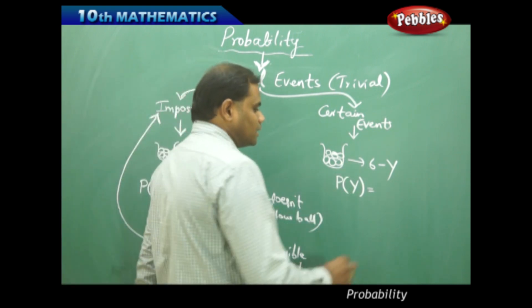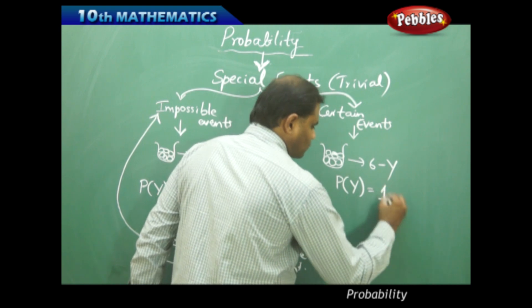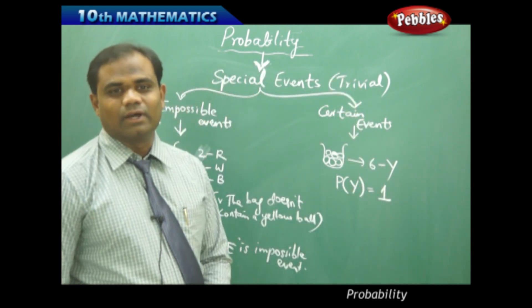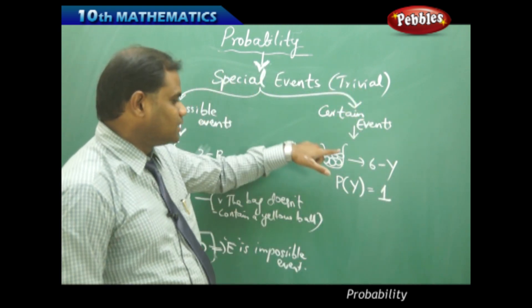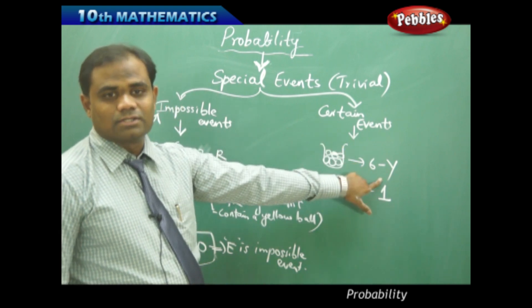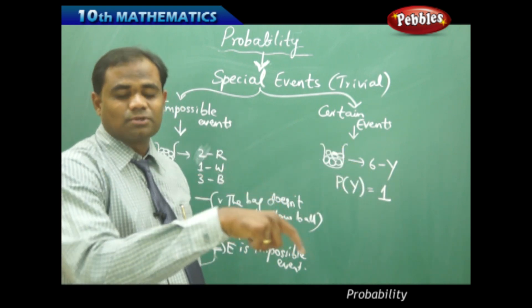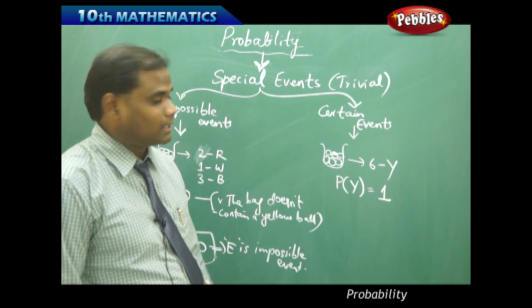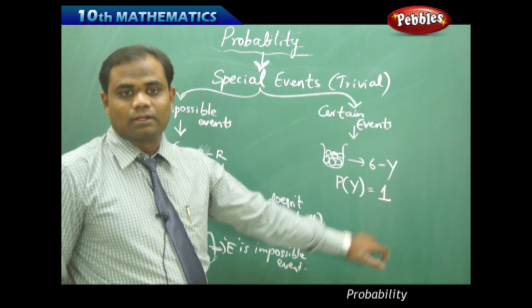So probability of picking a yellow ball is certain, therefore it is always one. In this case we say the event is certain because however many times you pick the ball, it is always yellow in color. So probability of picking the yellow ball is one.